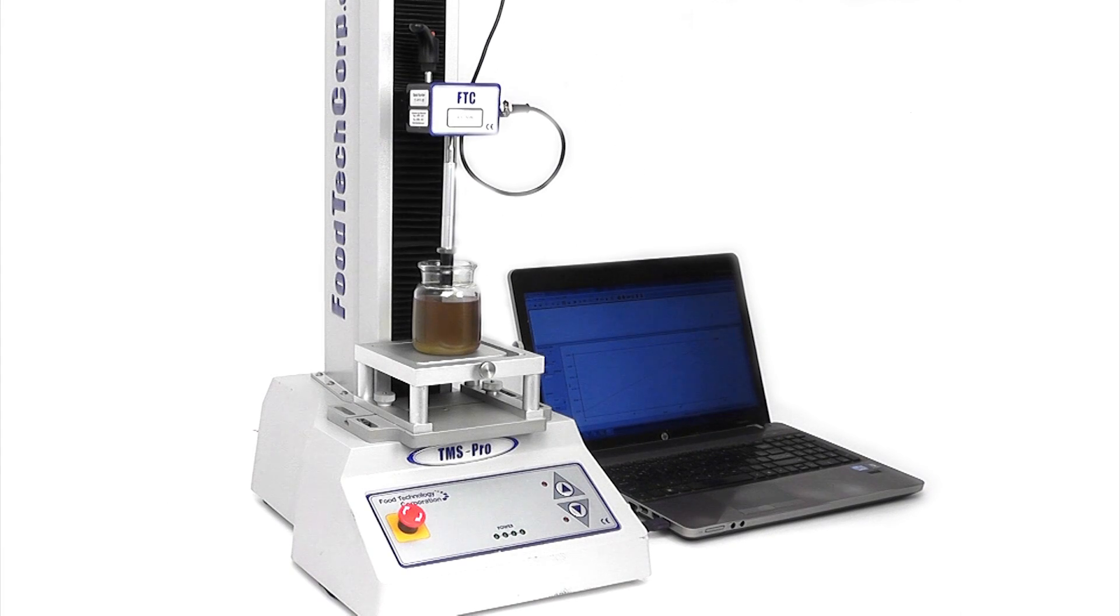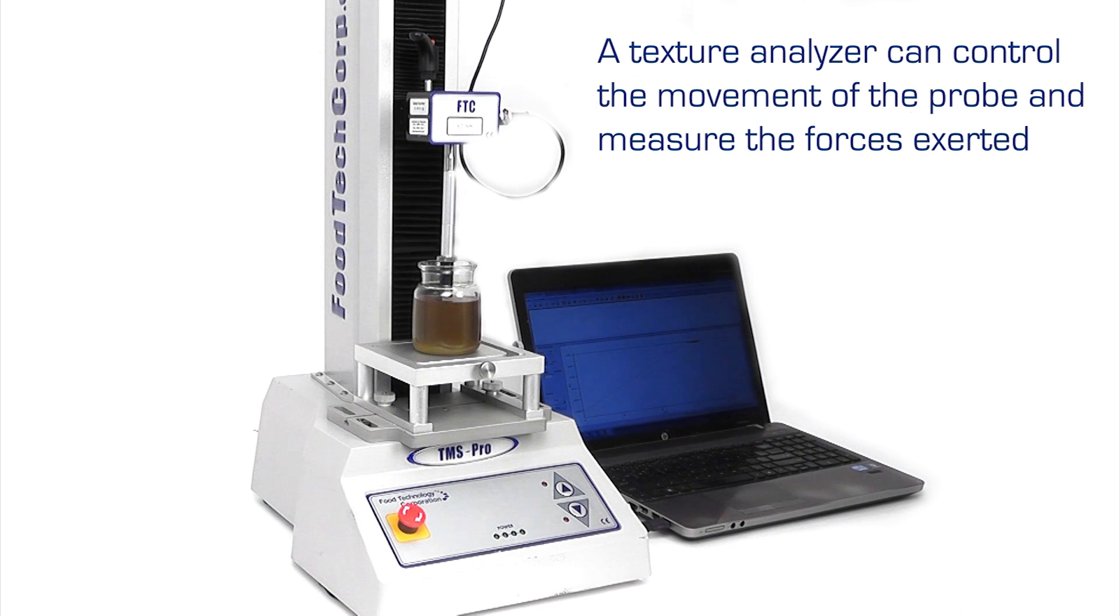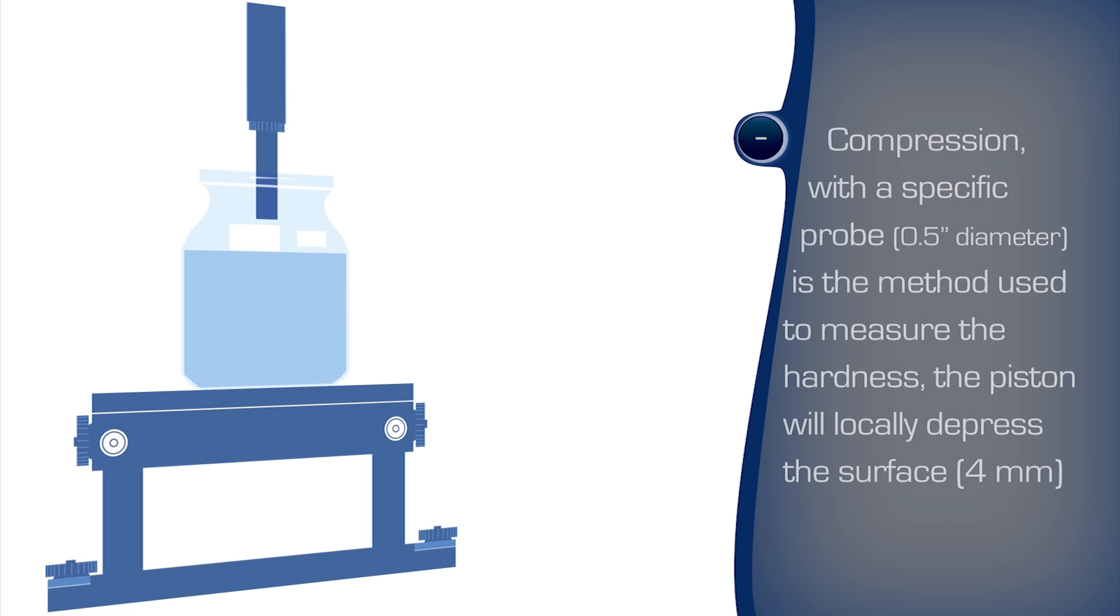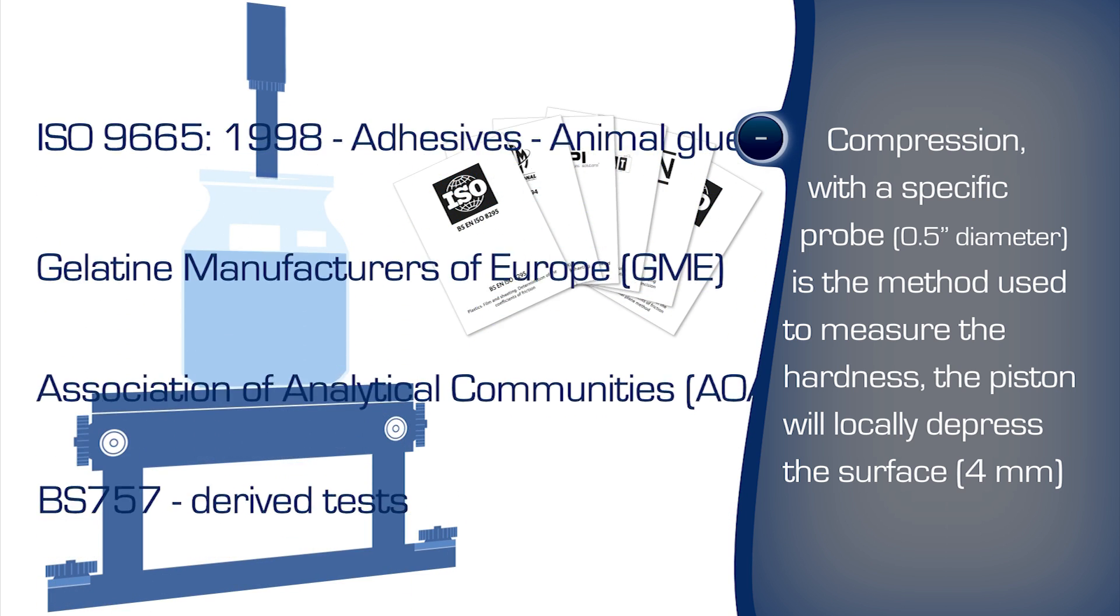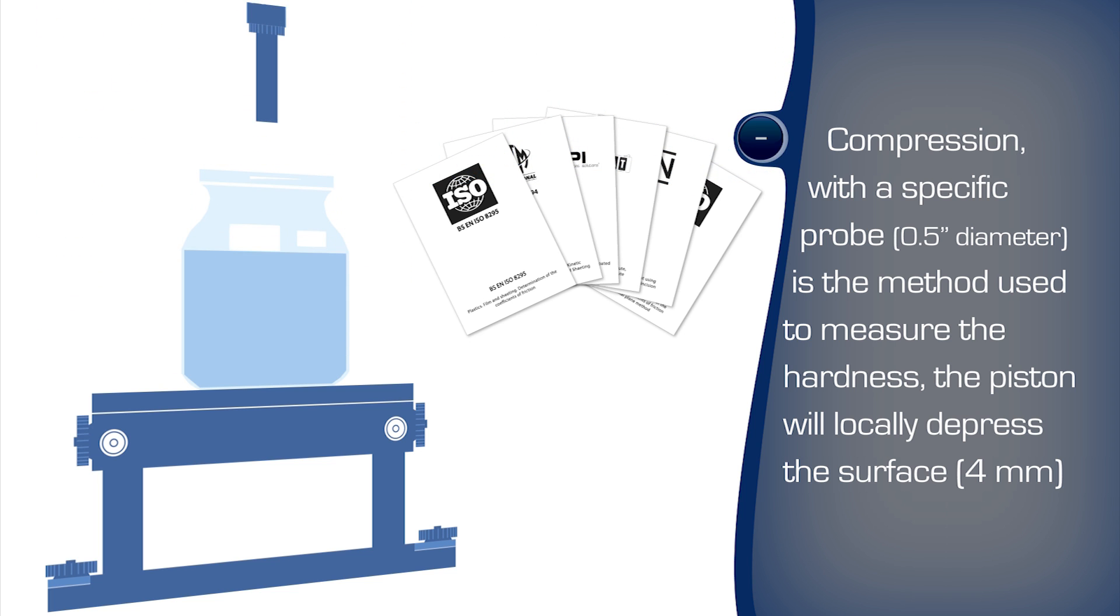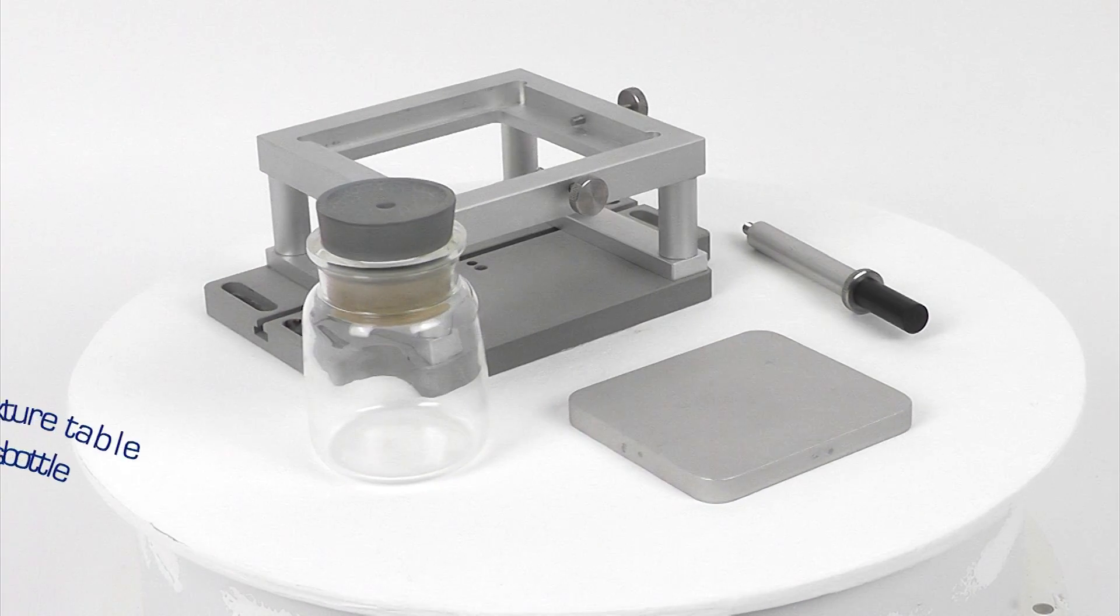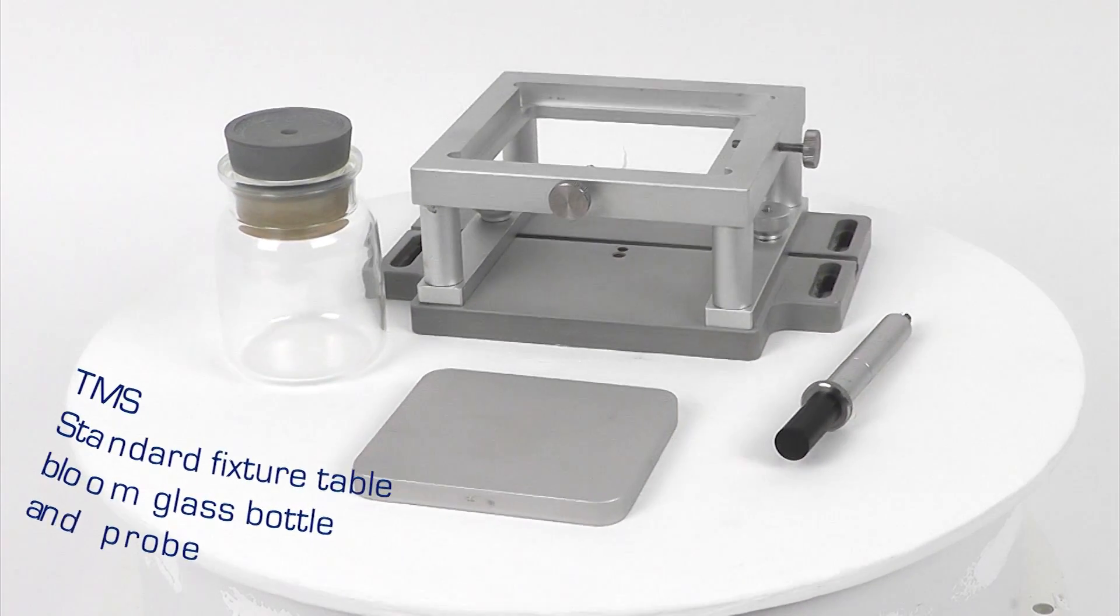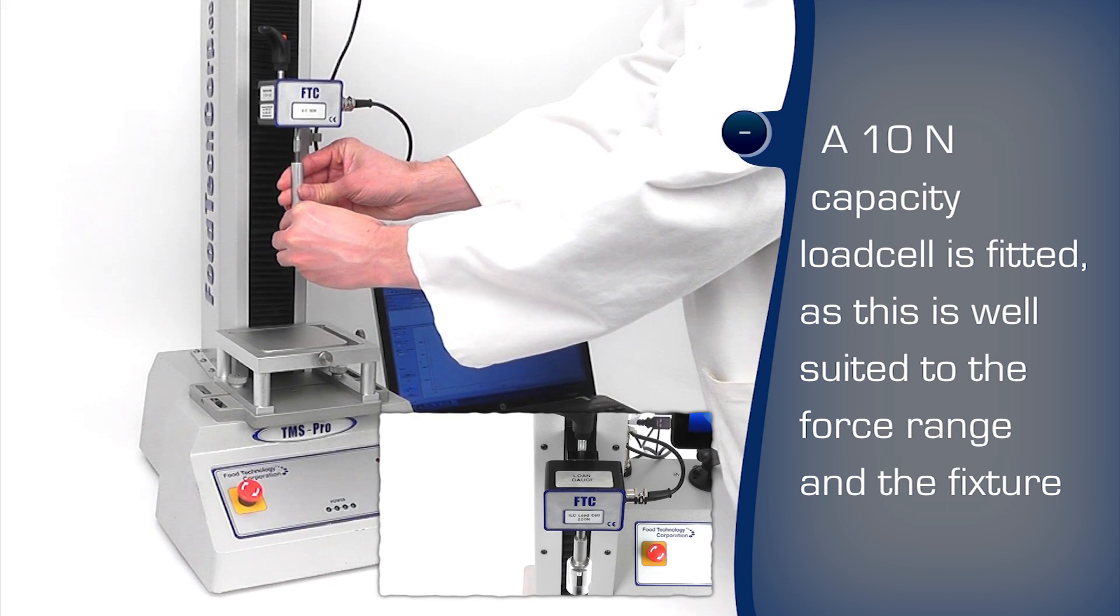The FTC texture measurement system can control the gel bloom strength test and automatically output the results. FTC fixtures and accessories conform to appropriate test standards including ISO 9665, AOAC 1985, Gelatin Manufacturers of Europe, and BS 757. The half-inch diameter probe is made from the highest standard food-grade materials.